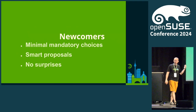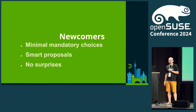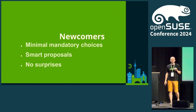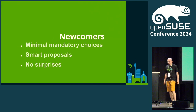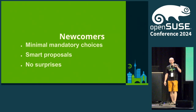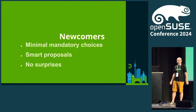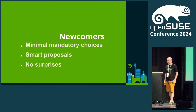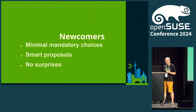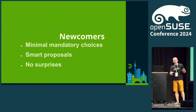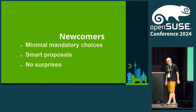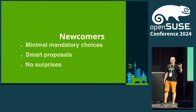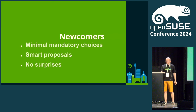For newcomers, the installer is important because it should have minimal mandatory choices — each choice, when you're new to something, creates a bit of stress because you don't know what to select. Smart proposals also help, so even if you select very minimal choices, the rest should just work. Newcomers also don't like surprises — if they try OpenSUSE with Windows preinstalled, they don't want the installer to silently kill Windows. Currently the installer supports resizing Windows and multiboot.